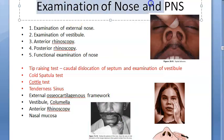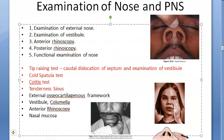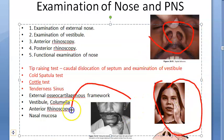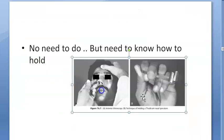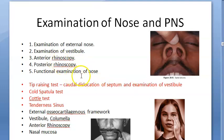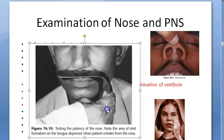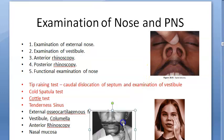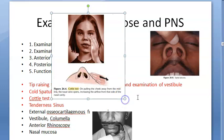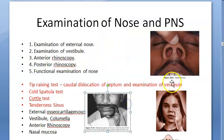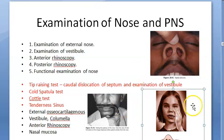For nose and paranasal sinuses examination, you will typically do three tests: the tip-raising test, Cottle's test, and the cold spatula test. The cold spatula test checks nasal patency by having the patient blow through one nostril while the other is closed, checking for mist formation. In Cottle's test, you pull the cheek away from the midline to open the nasal valve and check for increased airflow.